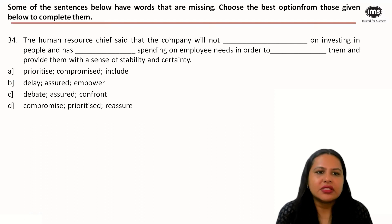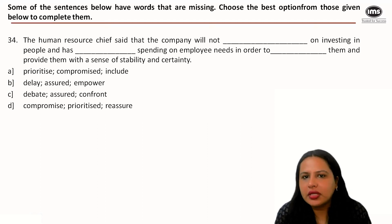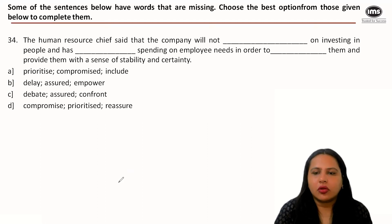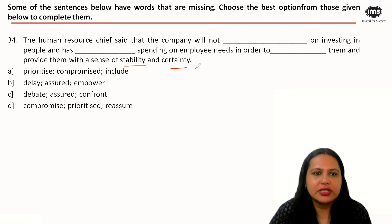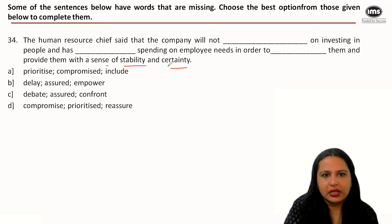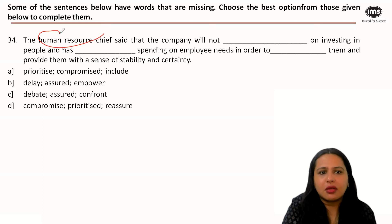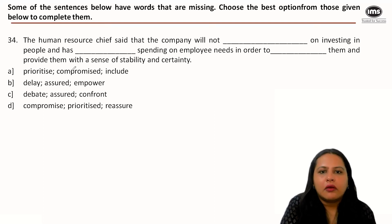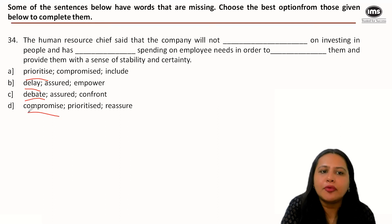Question six: 'The human resource chief said that the company will not dash on investing in people and has dash spending on employee needs in order to dash them and provide them with a sense of stability and certainty.' The company is talking about spending on employees and providing a sense of stability, so the sentence has a positive tone. For the first blank, phrases like 'will not prioritize,' 'will not delay,' or 'will not compromise' on investing are the choices.